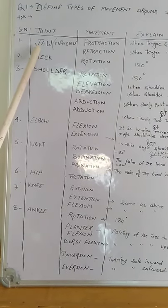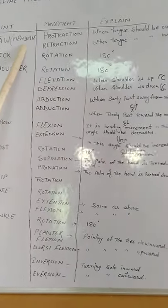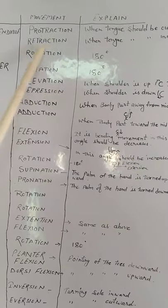Number 1, first joint is jaw. Lower jaw is called mandible. In jaw, movement is protraction and retraction.